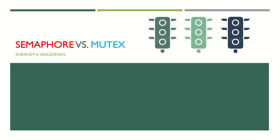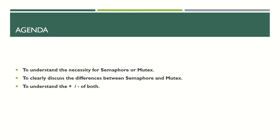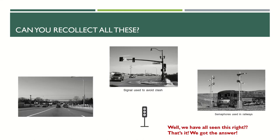Hello friends, welcome back. It's operating system content after a long time. I had a couple of requests from viewers about the differences between semaphore and mutex. I have taught what a semaphore is and written code in my Linux system programming playlist to prove how it works, but I didn't talk about mutex or how it differs from semaphore. This session will give a clear technical understanding of the differences.